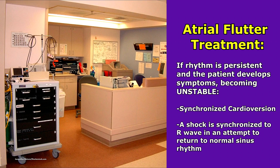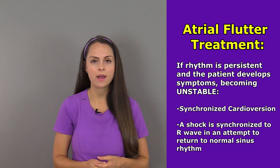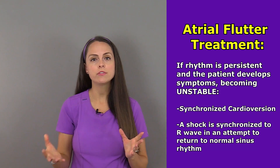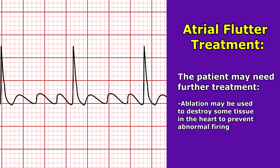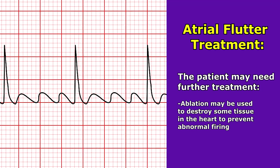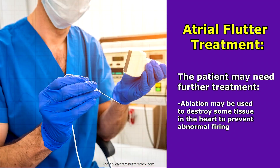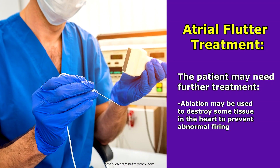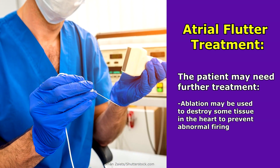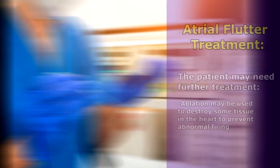Synchronized cardioversion is where a shock is synchronized to the patient's R wave, to hopefully convert them back into normal sinus rhythm. Some patients also need a procedure called an ablation, which ablates — meaning destroys or erodes — some of the tissue in the heart to prevent it from firing abnormally.